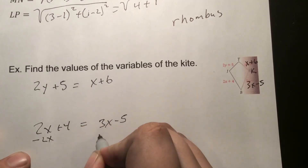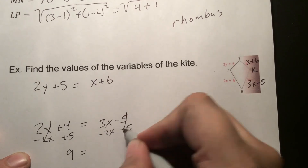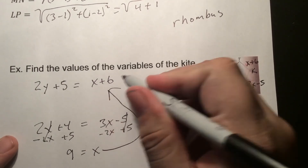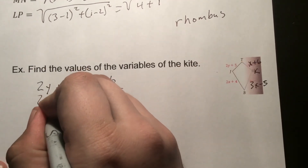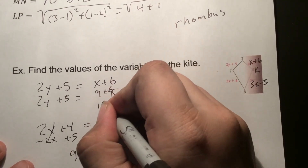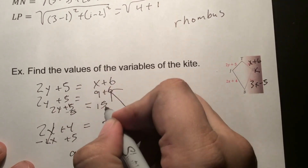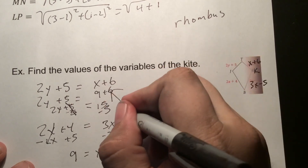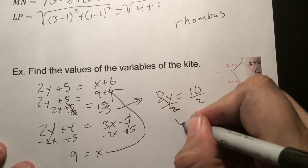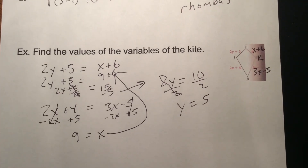Subtracting 2x from both sides and adding 5: 4 + 5 = 9, so x = 9. Substituting x = 9 into the first equation: 2y + 5 = 9 + 6 = 15. Subtracting 5 from both sides: 2y = 10, so y = 5.